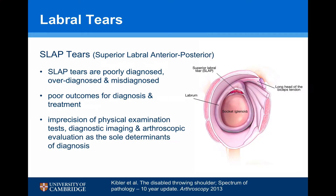SLAP tears are commonly associated with a disabled throwing shoulder. However, they are often poorly diagnosed, over-diagnosed, and misdiagnosed. As a result, there are poorer outcomes of both diagnosis and treatment. Imprecision of physical examination tests, diagnostic imaging, and arthroscopic evaluation are the sole determinants of diagnosis.